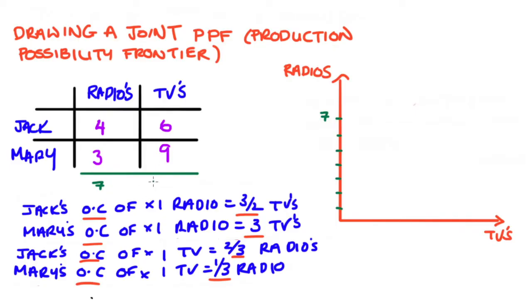Likewise, we do exactly the same thing for TVs. We add up if Jack and Mary were both specializing completely in TVs, we add them up together six plus nine is 15 and that's going to be our horizontal axis intercept.